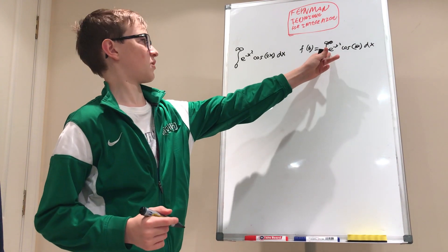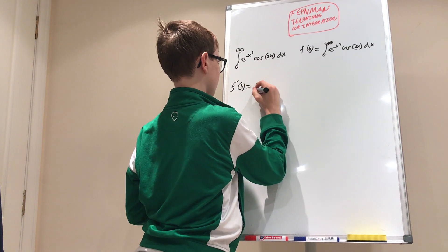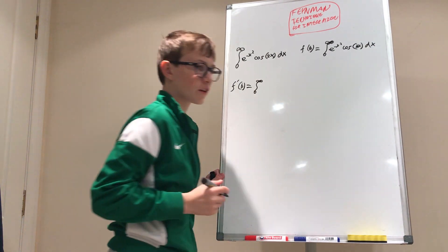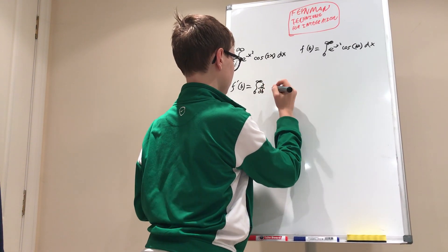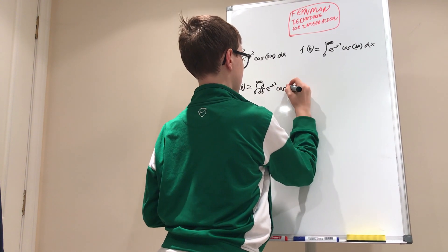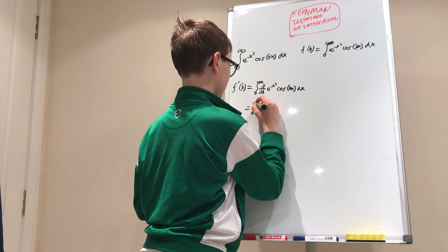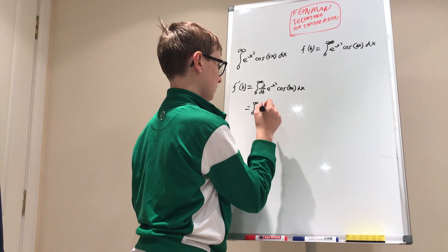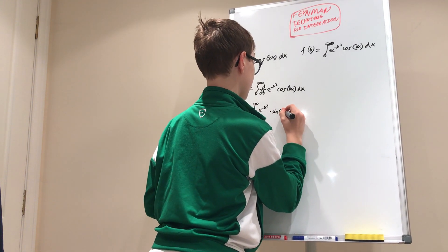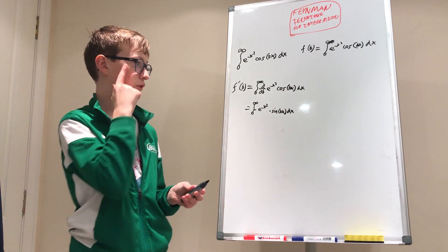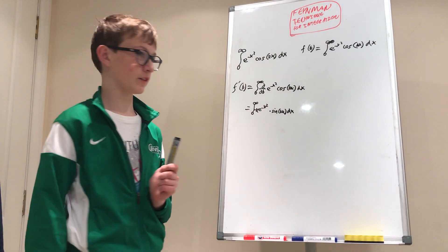To get our x out here we differentiate both sides with respect to b. So f prime of b equals the integral between 0 and infinity. We can do the differentiation under the integral sign because the bounds are not dependent on b. So the partial derivative with respect to b of e to the negative x squared times cosine of bx dx. Now e to the negative x squared is just a constant, so this equals the integral of e to the negative x squared times negative sine of bx times x — and just like that we got our x times e to the negative x squared, like magic.